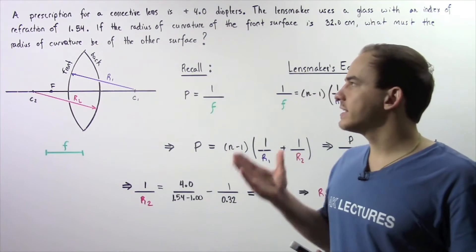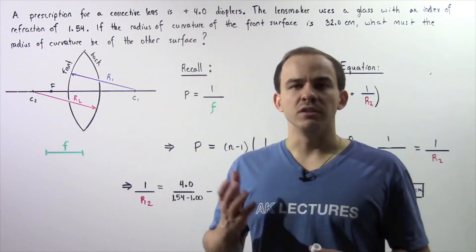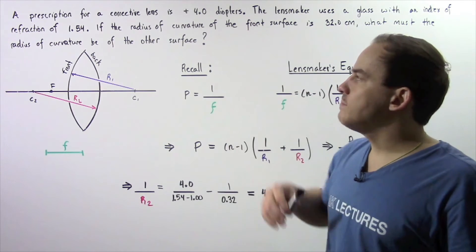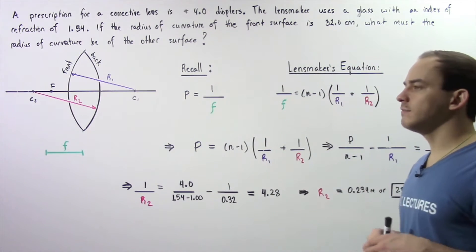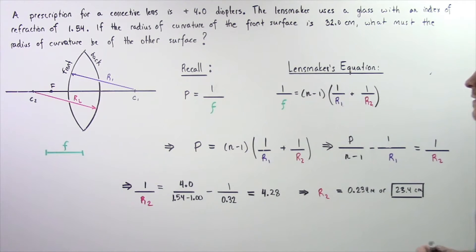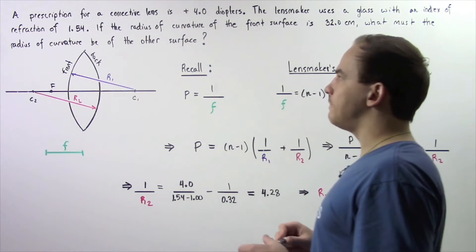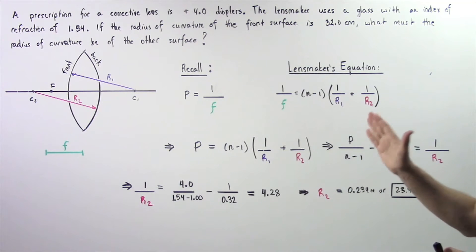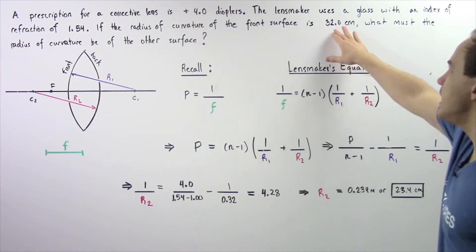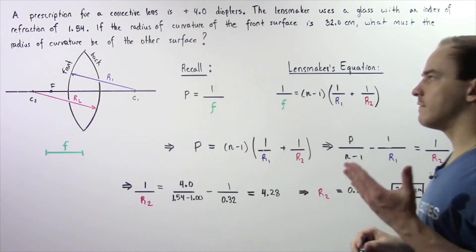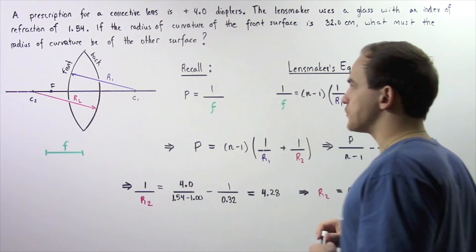Let's look at the following example that will deal with the lens maker's equation. A prescription for a corrective lens is positive 4. The lens maker uses a glass with an index of refraction of 1.54. If the radius of curvature of the front surface of the lens is 32 centimeters, what must the radius of curvature be of the other surface?